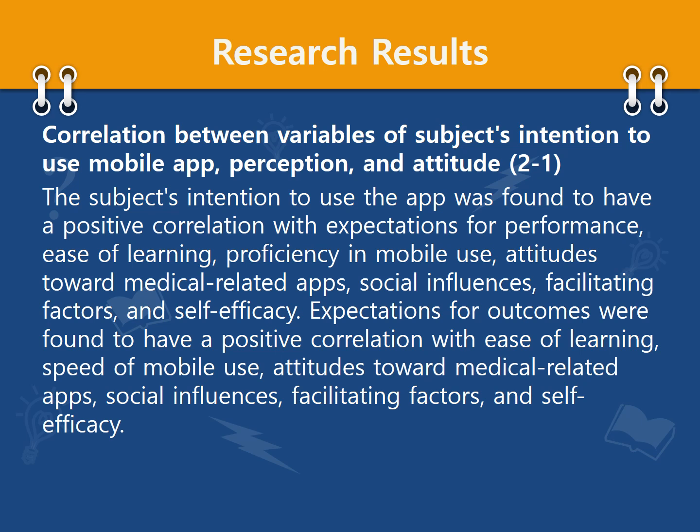Correlation between variables of subject intention to use mobile apps, perception and attitude: The subject intention to use the app was found to have a positive correlation with expectation for performance, ease of learning, proficiency in mobile use, attitude toward medical-related apps, social influence, facilitation factors, and self-efficiency. Ease of learning was found to have a positive correlation with speed of mobile use, attitude toward medical-related apps, social influence, facilitation factors, and self-efficiency.